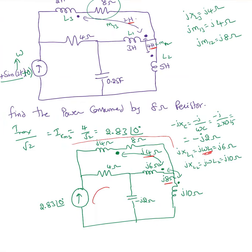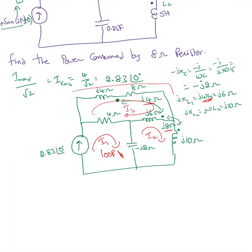Now I'm going to take all three loops: Loop 1 as I1, Loop 2 as I2, and Loop 3 as I3. For Loop 1, when you look at it, there is a current source in the outer branch of that loop. I'm assuming the current flowing in this branch as I1, but I already know the real current flowing there is 2.83 amperes, so I1 = 2.83∠0°. This is my first equation.